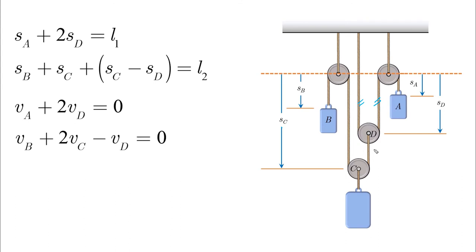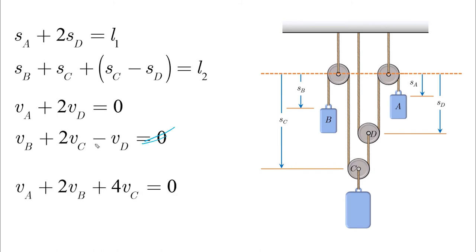Taking the derivatives: for the first cable, vA plus 2vD equals zero; for the second cable, vB plus 2(vC minus vD) equals zero. Since we are interested in the motion of A, B, and C but not D, we eliminate D. From the first equation, vD equals minus vA/2 — substituting into the second equation gives the relationship between A, B, and C.